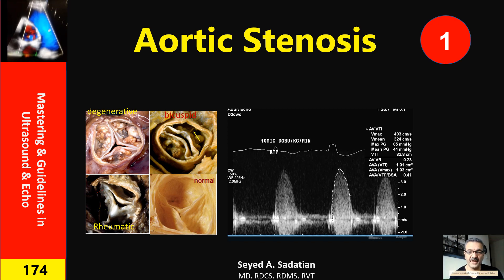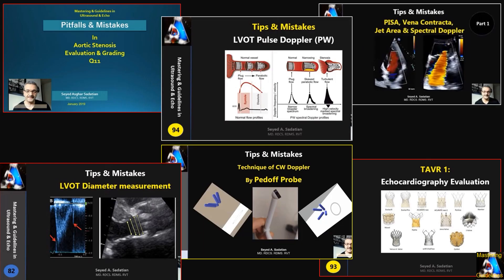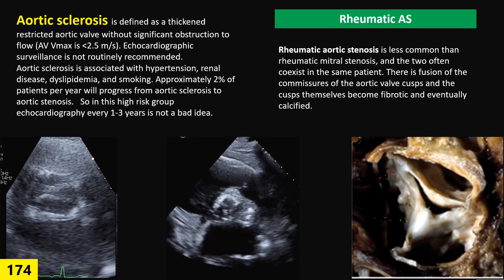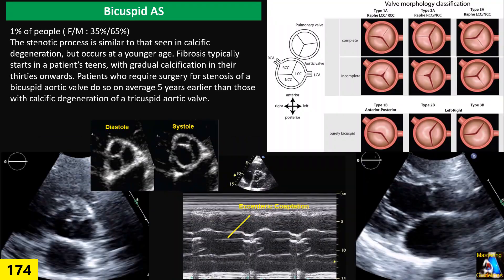Welcome to Mastering and Guidelines in Ultrasound and ECHO. In this one-hour lecture, you will learn the most important information, practical points and tips in aortic stenosis, including etiology and all its types: degenerative, bicuspid or anomaly, rheumatic, and many others that you will learn in this lecture.